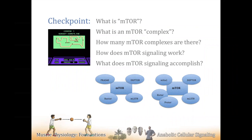The mTOR complex means there's a bunch of proteins that travel together. Think of it like a family — a husband, wife, daughter, son, dog, goldfish — they're all in the same household, a functional unit. Nobody would argue the dog and the dad are the same person. These are different proteins that live in the same household. That's what mTOR complexes are: a bunch of proteins in the same household.